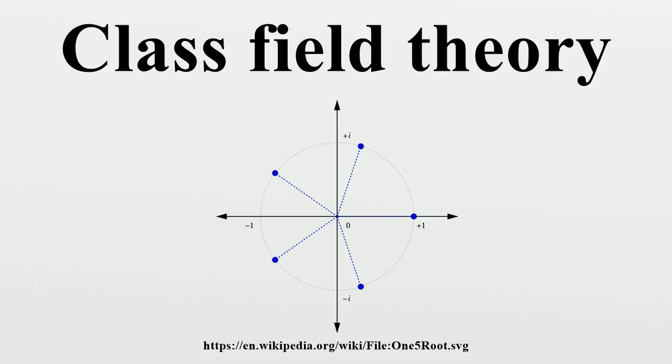Class field theory also includes a reciprocity homomorphism, which acts from the ideal class group of a global field, i.e., the quotient of the ideals by the multiplicative group of the field.